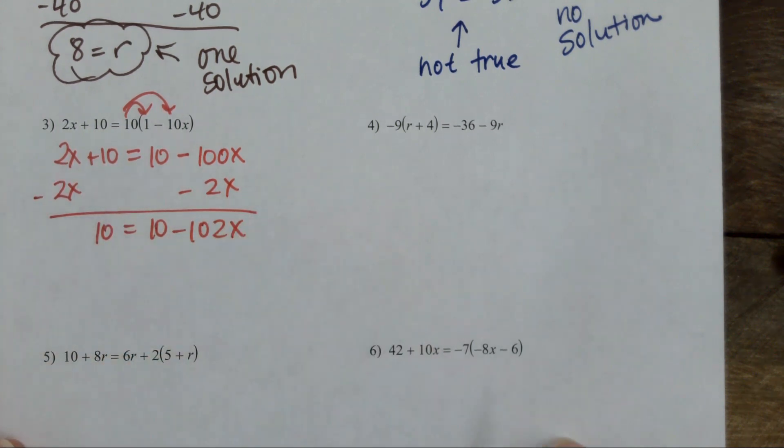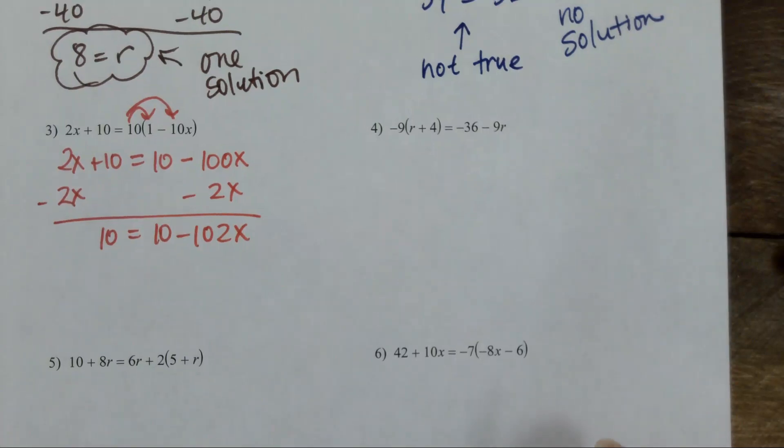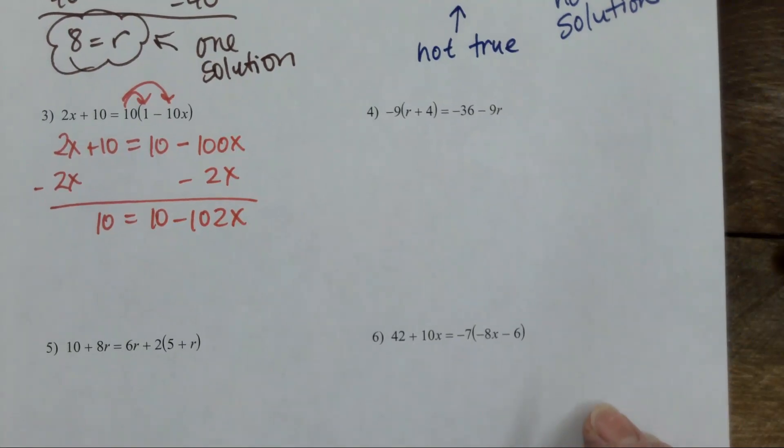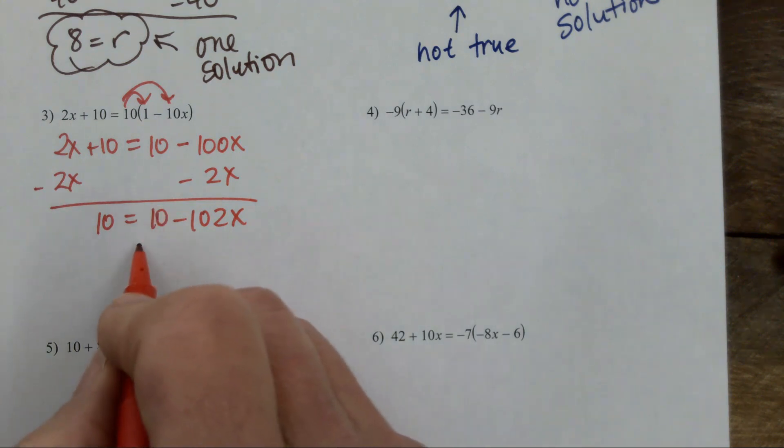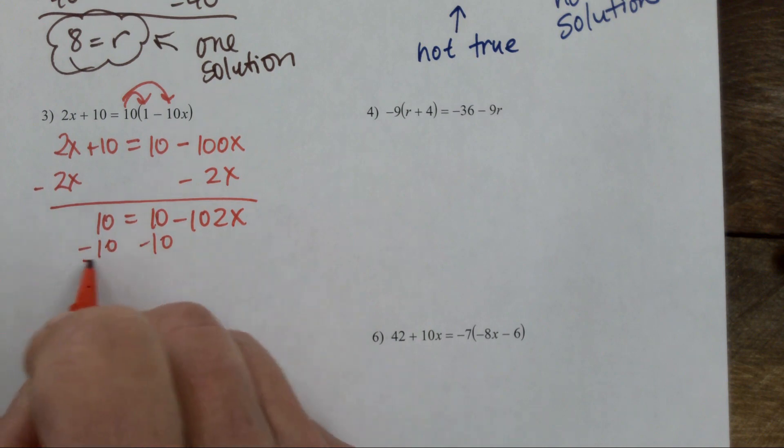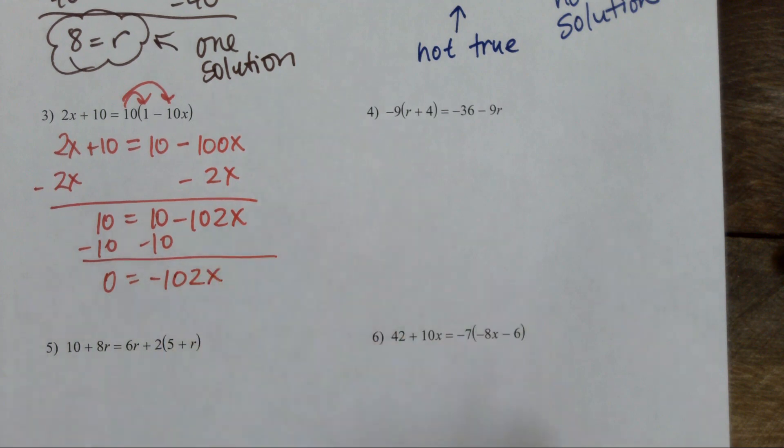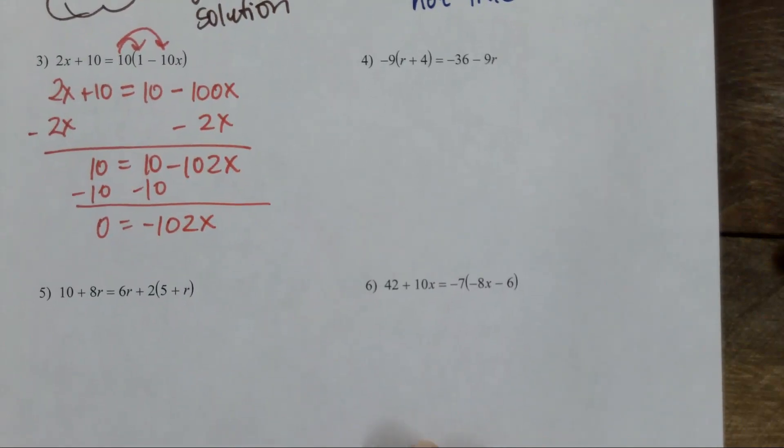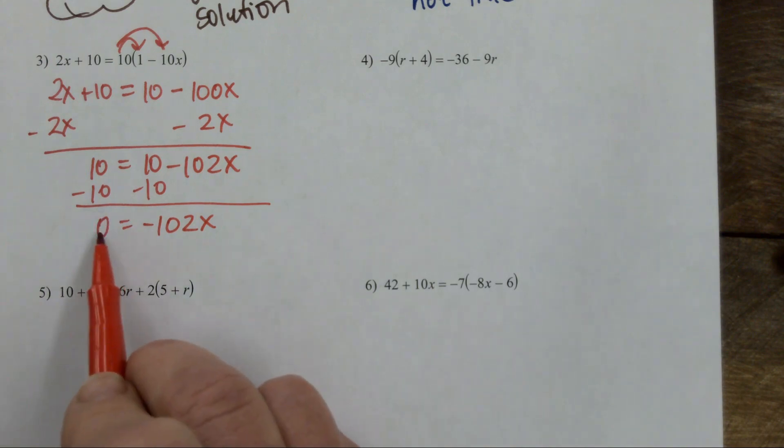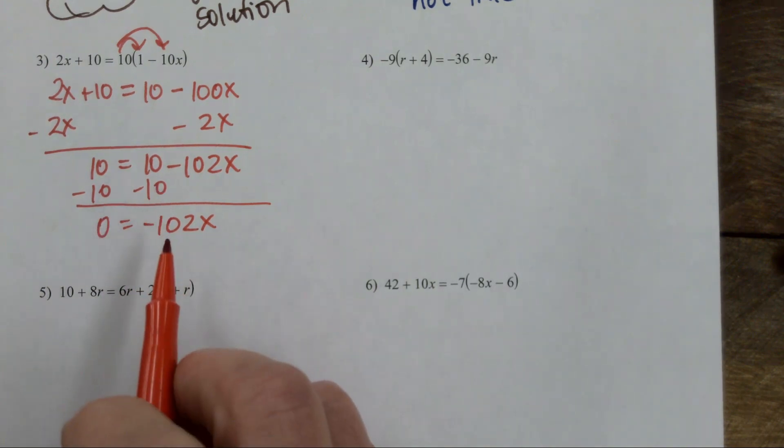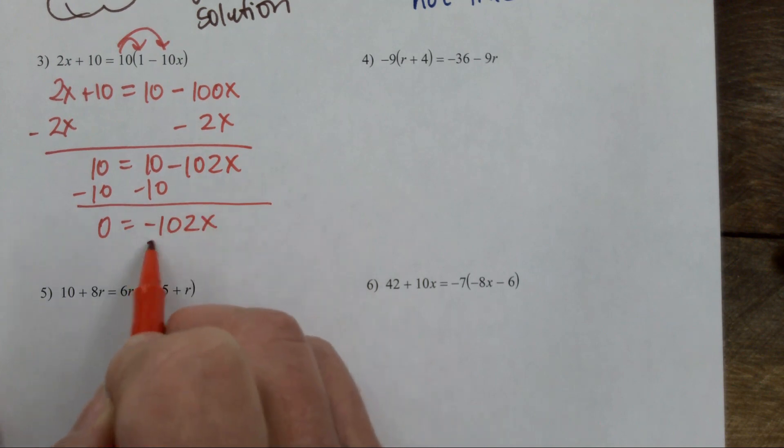Okay, there I am. Now what? Minus 10. I have a headache from yesterday. Okay, now what? Wait, can you divide 0? I can't divide the 0. I have to divide by the variable, so I'm going to divide by negative 102.